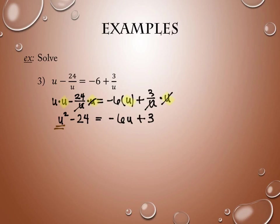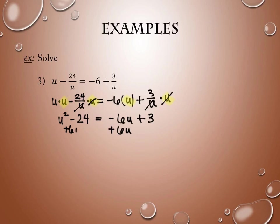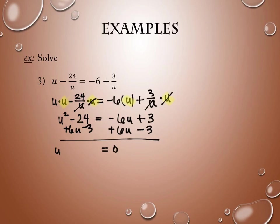We've been working with quadratics for several class periods. When we get to the point where we have a quadratic, we have to put everything on the same side. So I can move the 6U by adding 6U, and subtract 3. The right-hand side becomes 0. The left-hand side is U squared plus 6U, and then negative 24 minus 3, which is negative 27.